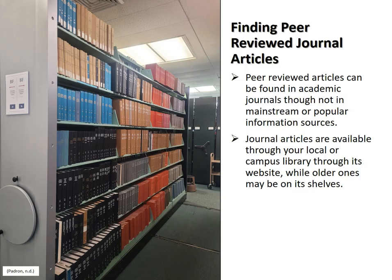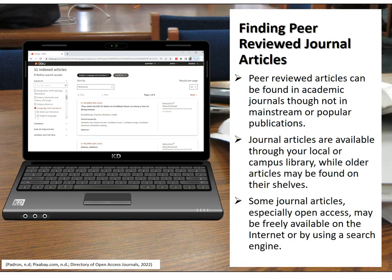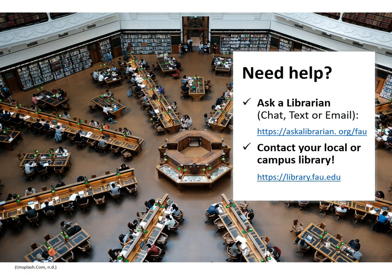Peer-reviewed articles can be found in academic journals, though not in mainstream or popular information sources. Journal articles are available through your local or campus library through its website, while older ones may be on its shelves. Some journal articles, especially open access, may be freely available on the internet or by using a search engine. If you need help, you may chat, text, or email your questions to our Ask a Librarian service. FAU students and affiliates may visit the FAU Library's website or its locations on any of the FAU campuses.